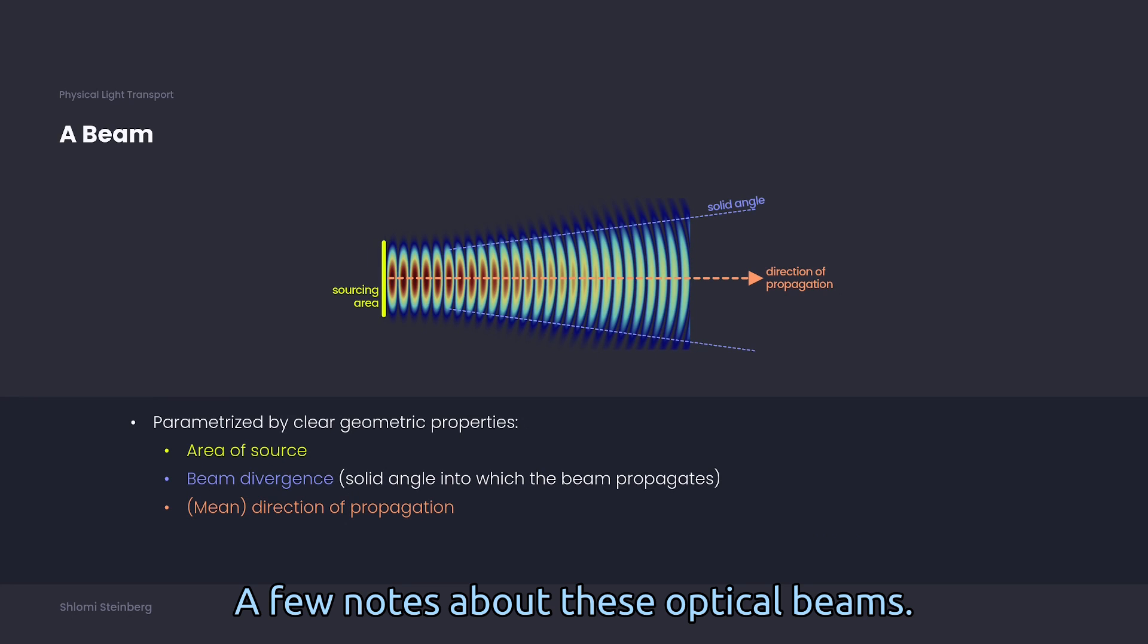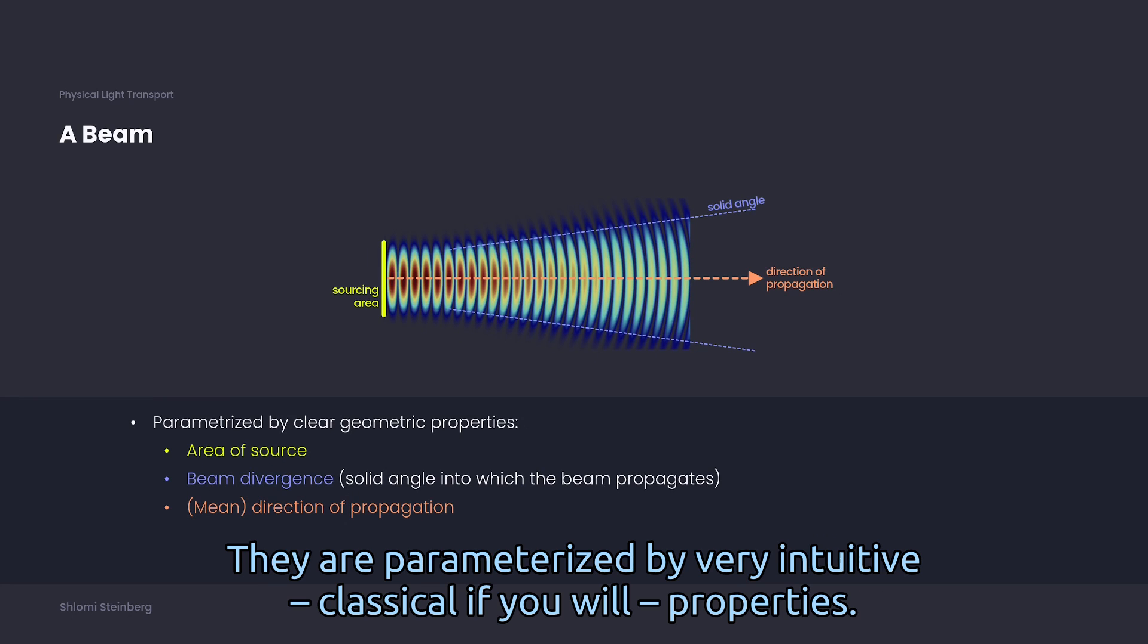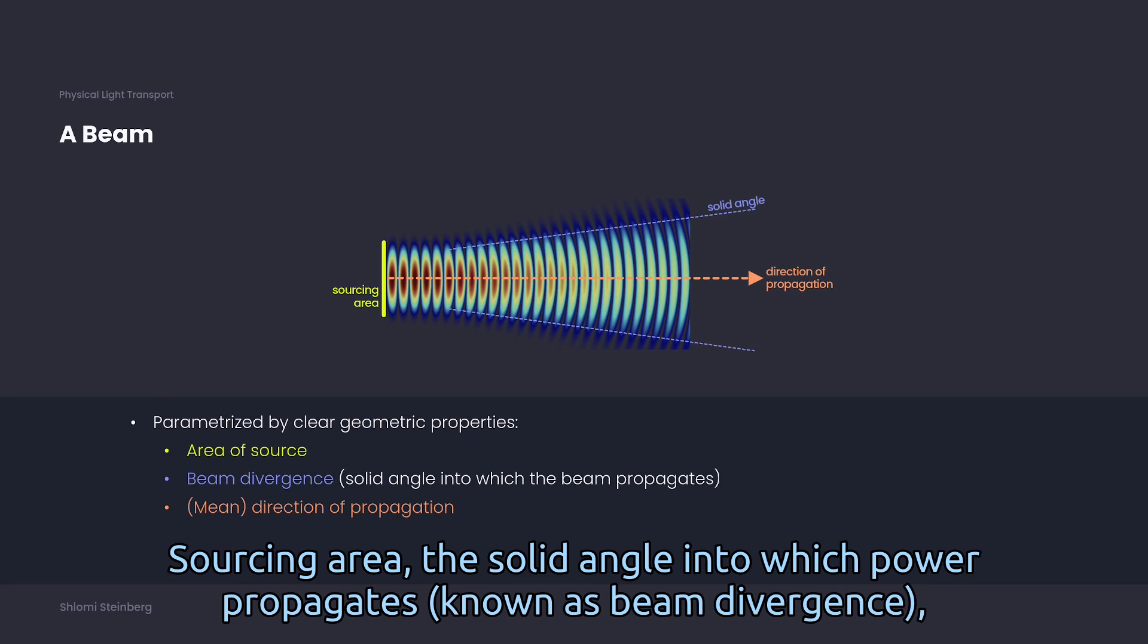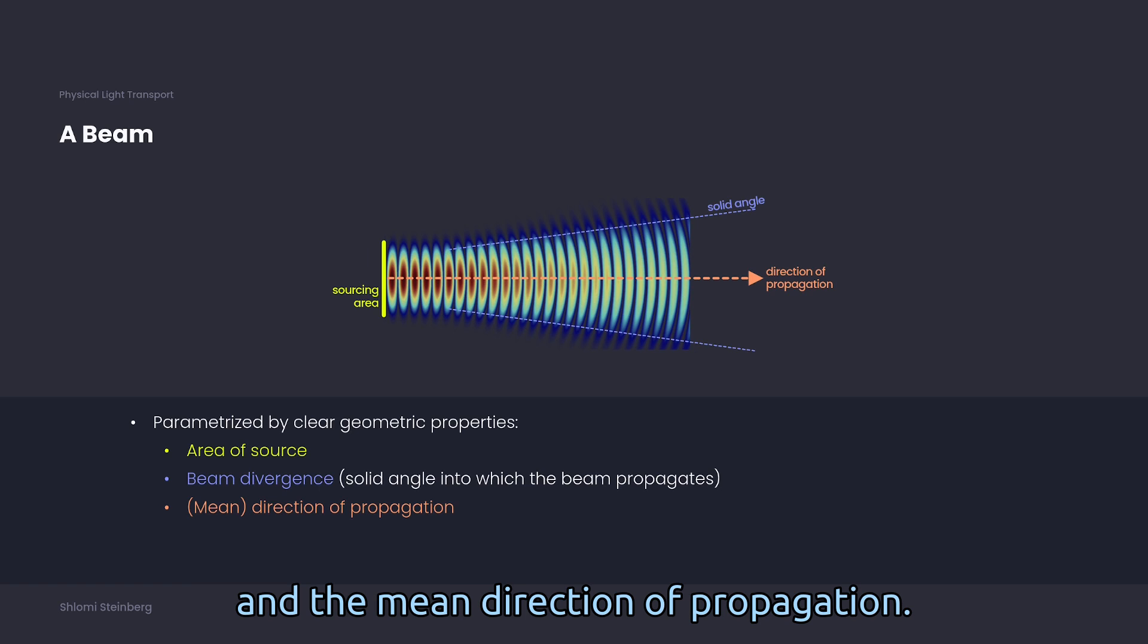A few notes about these optical beams. They are parameterized by very intuitive, classical if you will, properties: sourcing area, the solid angle into which power propagates, known as beam divergence, and the mean direction of propagation.